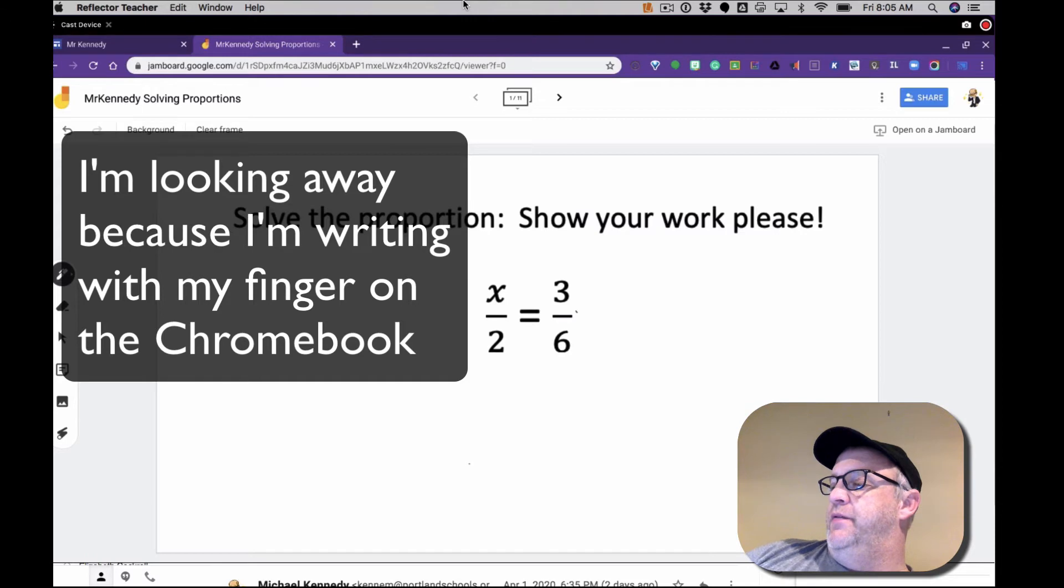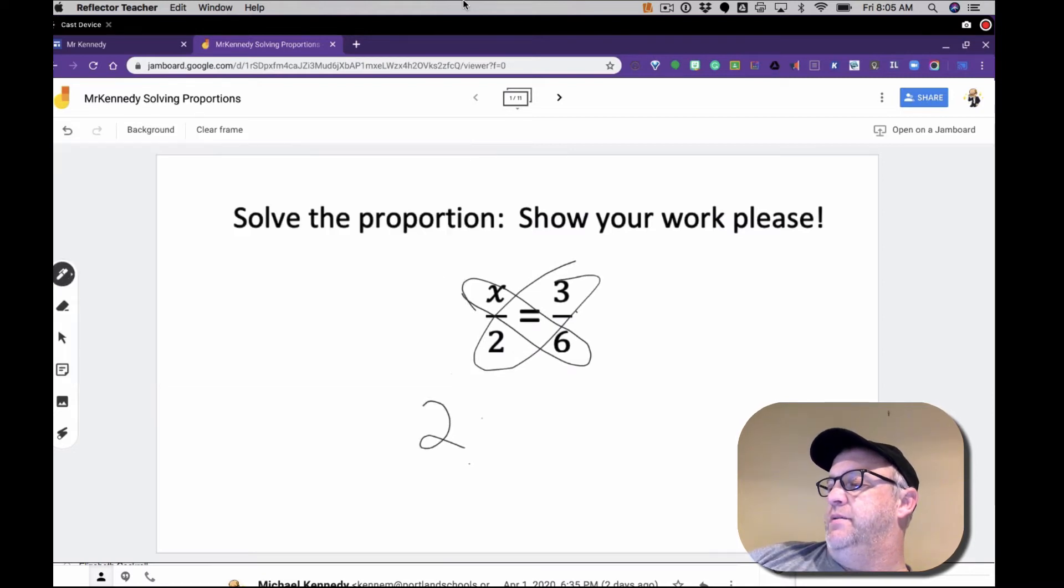Solve the proportion. If you remember you set your proportion equal to each other and so now we have 2 times 3 equals x times 6 and that's equal to 6 equals 6x.